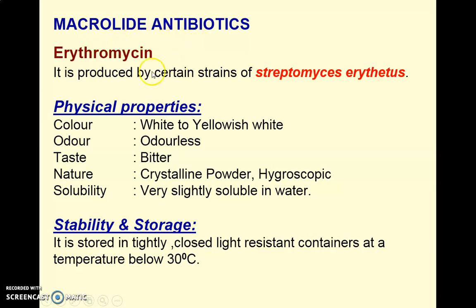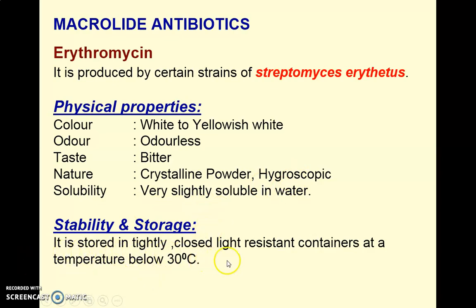The first example among macrolides is erythromycin, which is produced by certain strains of Streptomyces erythreus — this is the biological source of erythromycin. As far as physical properties are concerned, it is a white to yellowish-white, odorless, bitter-tasting crystalline powder that is hygroscopic and very slightly soluble in water. It is stored in a tightly closed, light-resistant container at a temperature below 30 degrees Celsius.